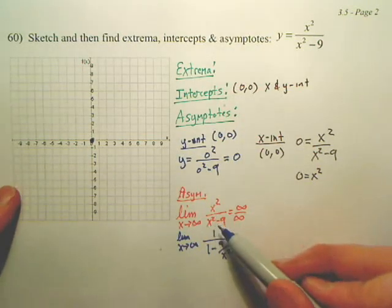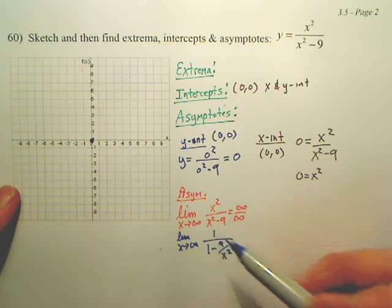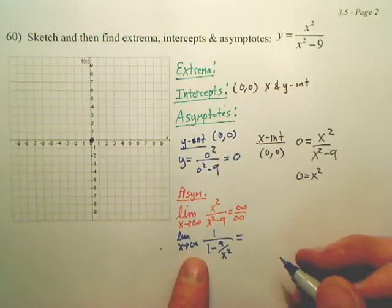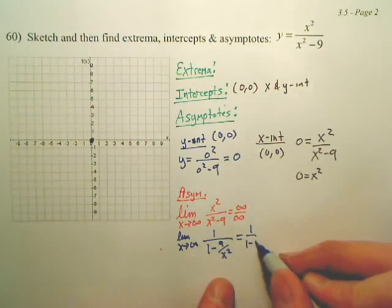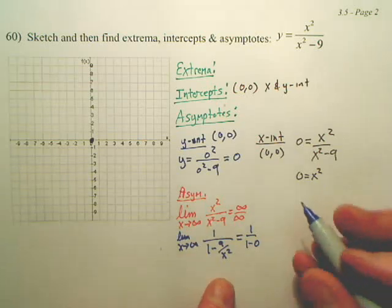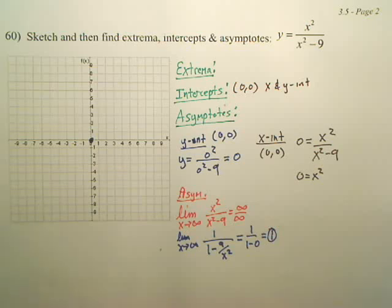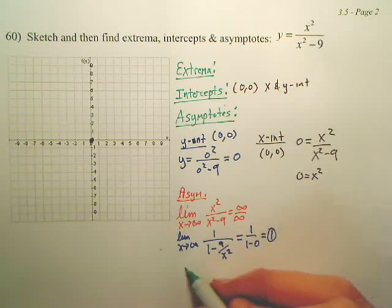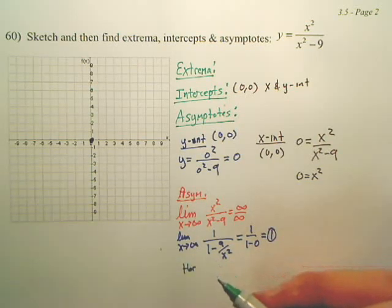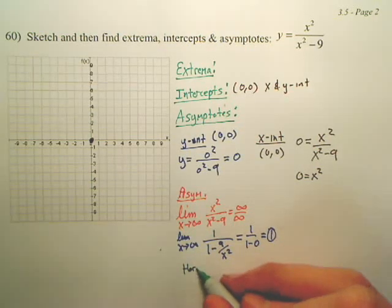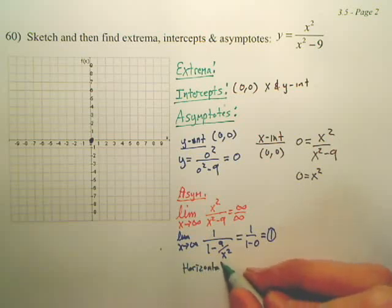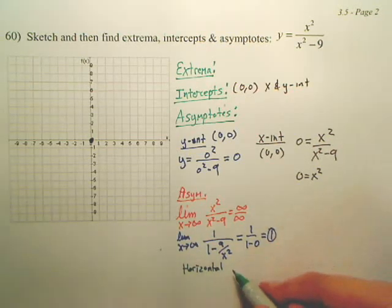Again, how I got this? I divided everything by x-squared. When I plug in infinity, what do I get? Don't you get 1 over 1 minus 0, which is 1? What does that mean? I have a horizontal tangent line.